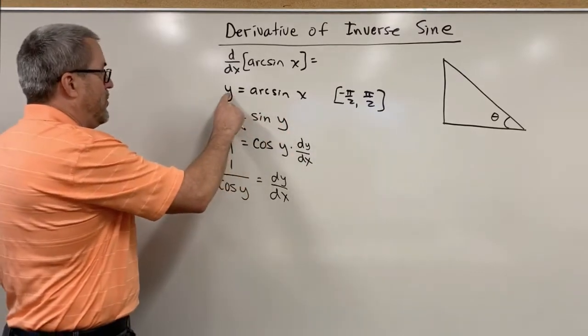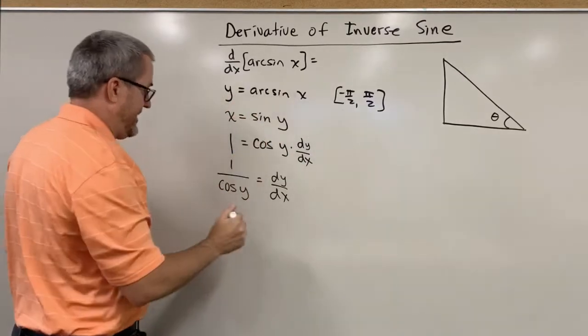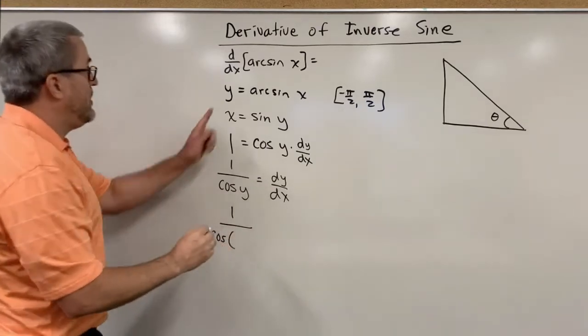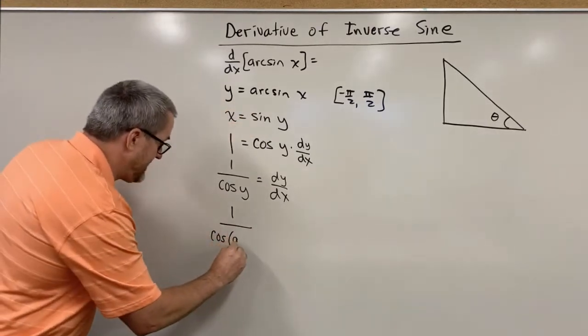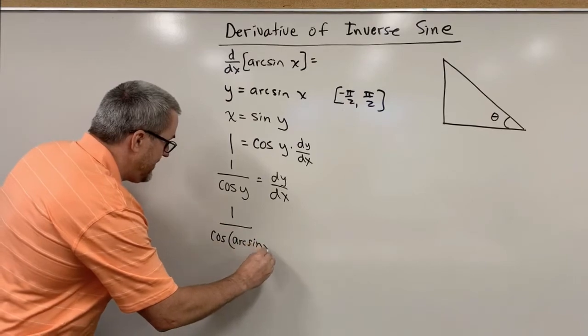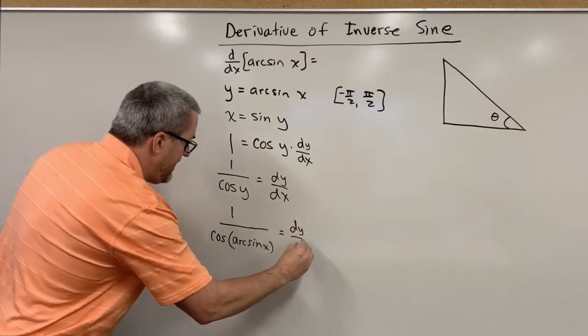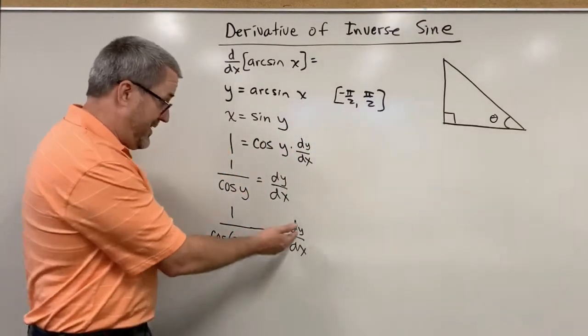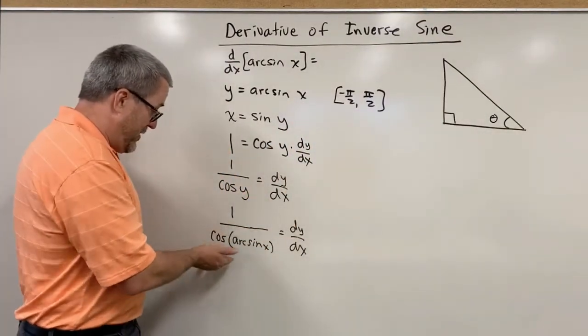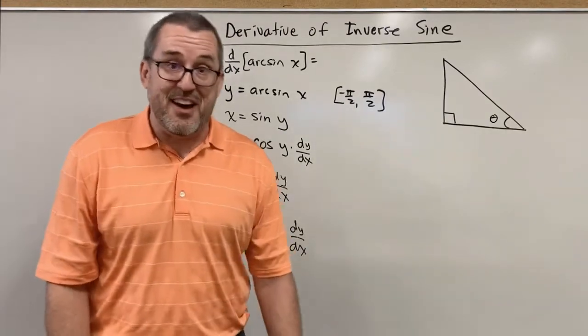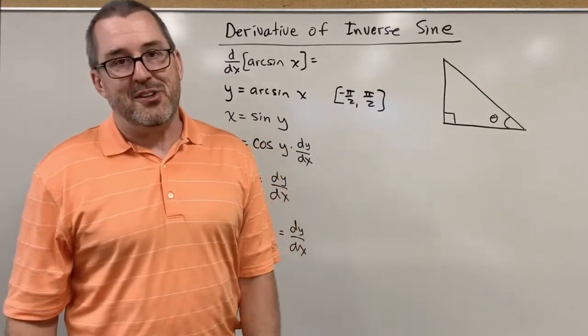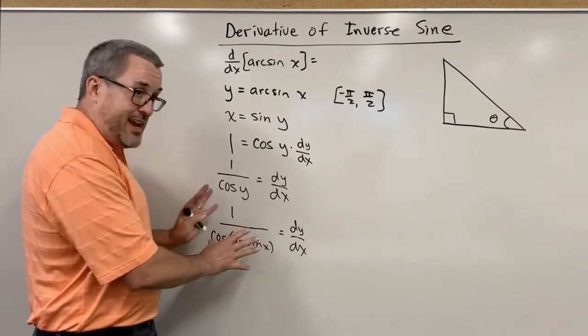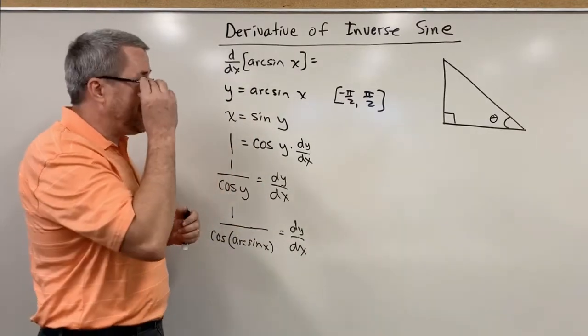So remember up here, y is the arc sine of x. So we could say 1 over the cosine of y, the arc sine of x. So we could legitimately just stop right there and say dy dx is 1 over the cosine of the arc sine of x, but that's kind of a mouthful. We're going to now take this thing and simplify it so we have a neater way to express the derivative of arc sine of x.